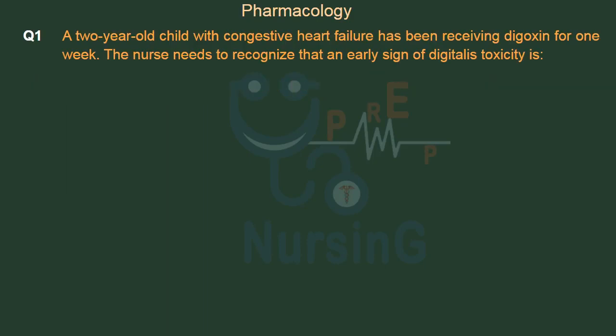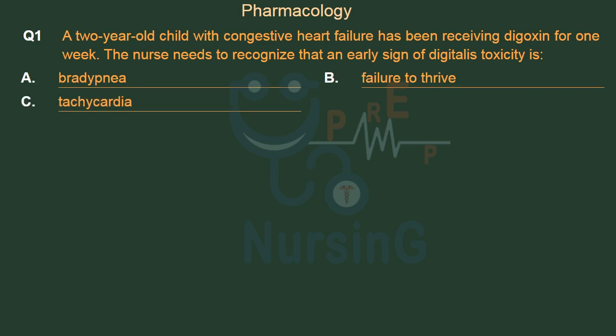Pharmacology question: A 2-year-old child with congestive heart failure has been receiving digoxin for 1 week. The nurse needs to recognize that an early sign of digitalis toxicity is — Option A: Bradipnea. Option B: Failure to thrive. Option C: Tachycardia. Option D: Vomiting. The right answer is Option D, Vomiting.